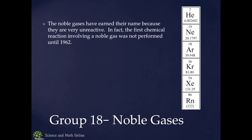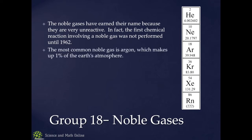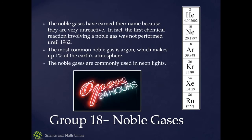Noble gases got their name because they're not reactive. It was 1962 when they made their first compound — xenon hexafluoride, XeF6, was the first compound made with a noble gas. The most common noble gas is argon, which makes up a full 1% of our atmosphere. They're also used in neon lights.